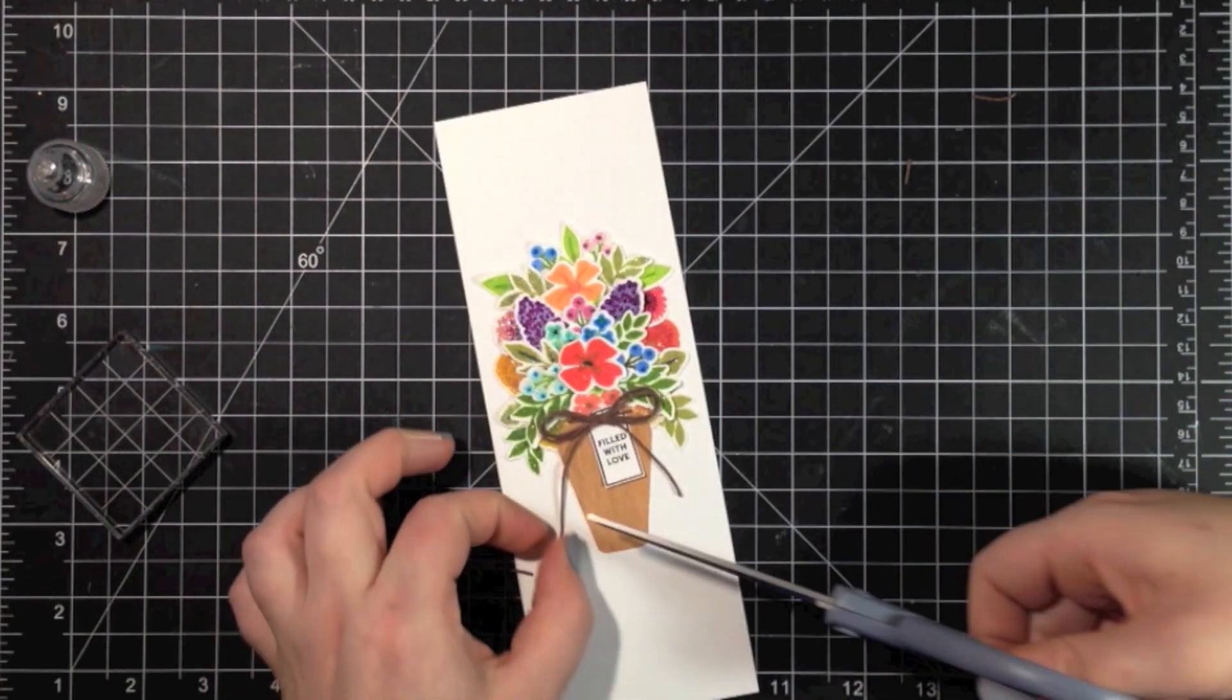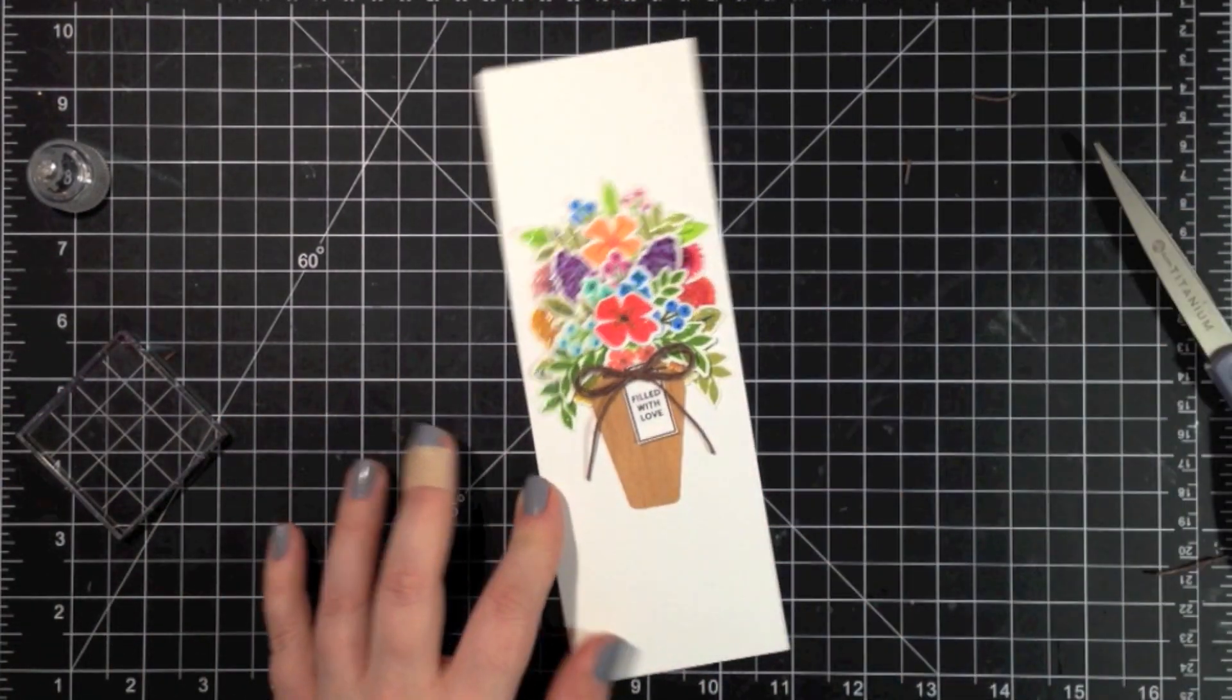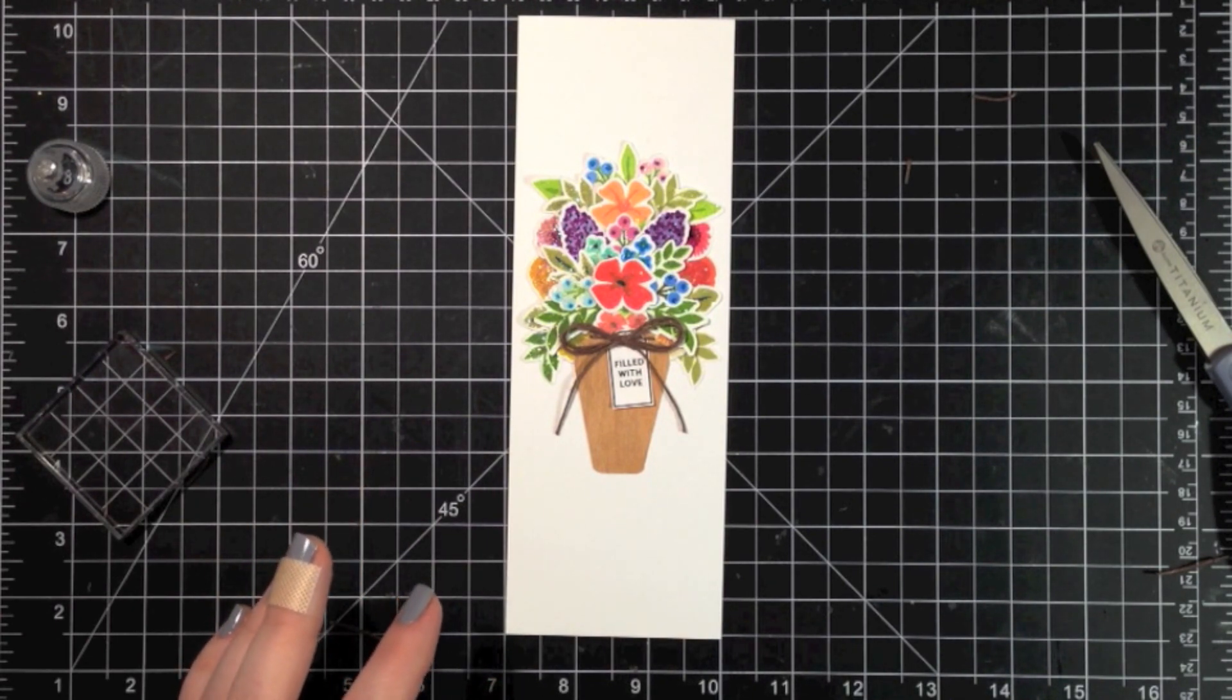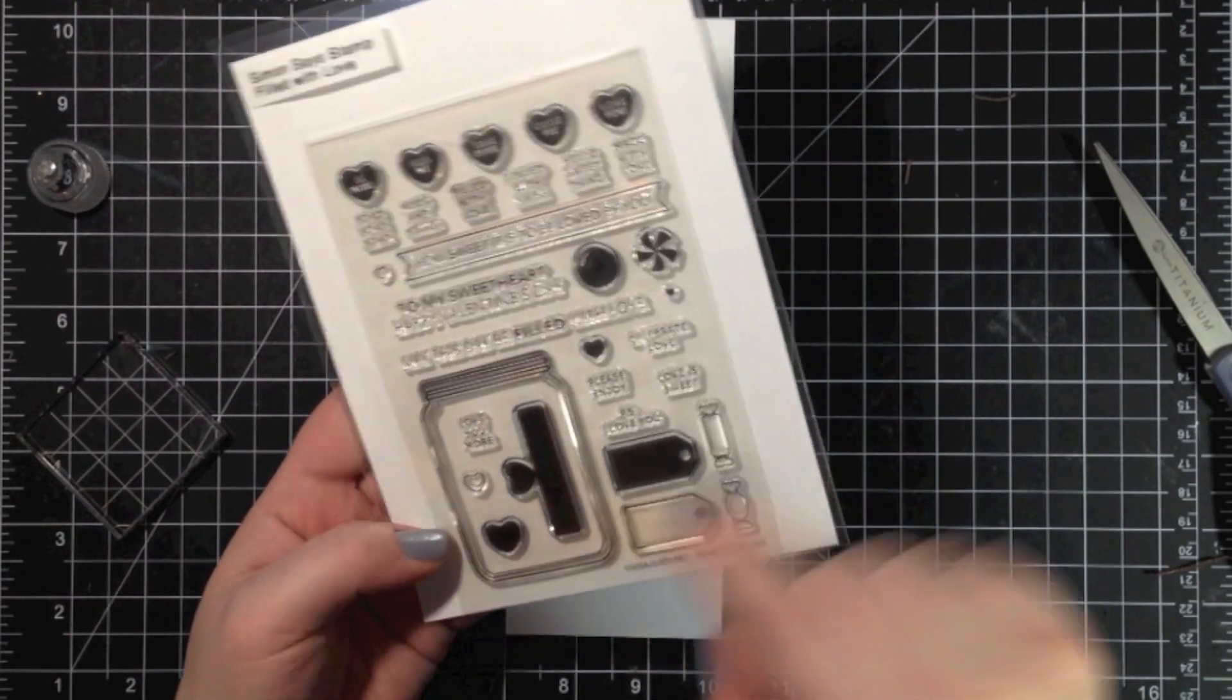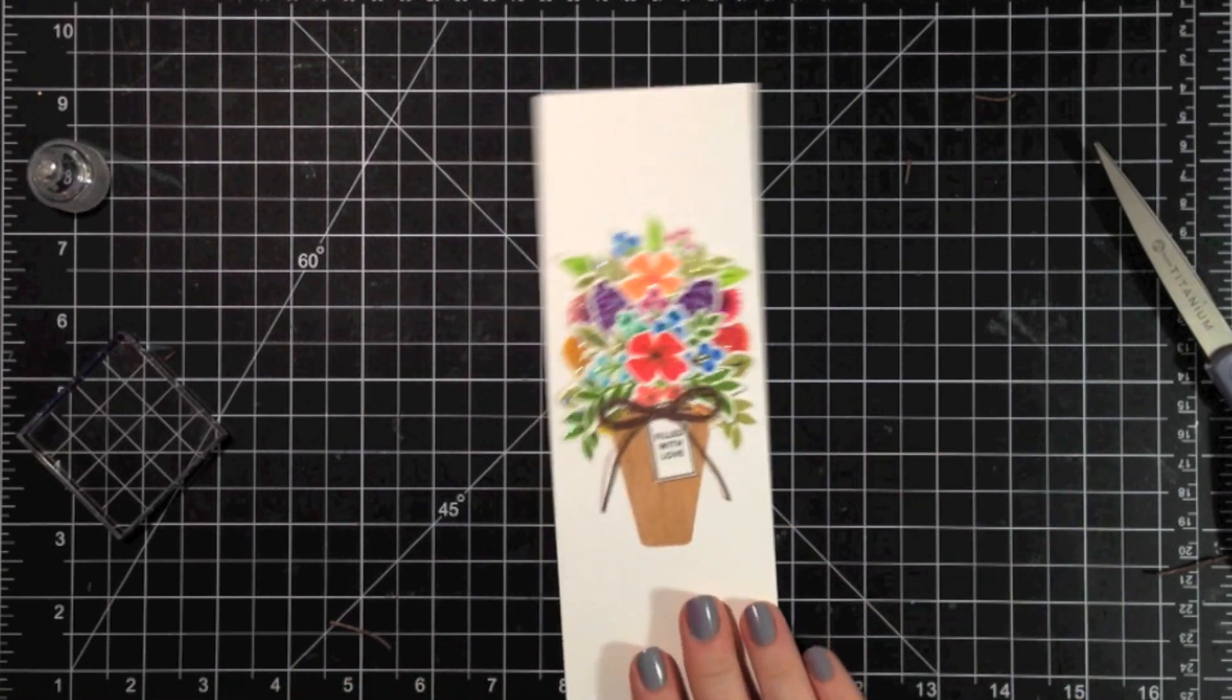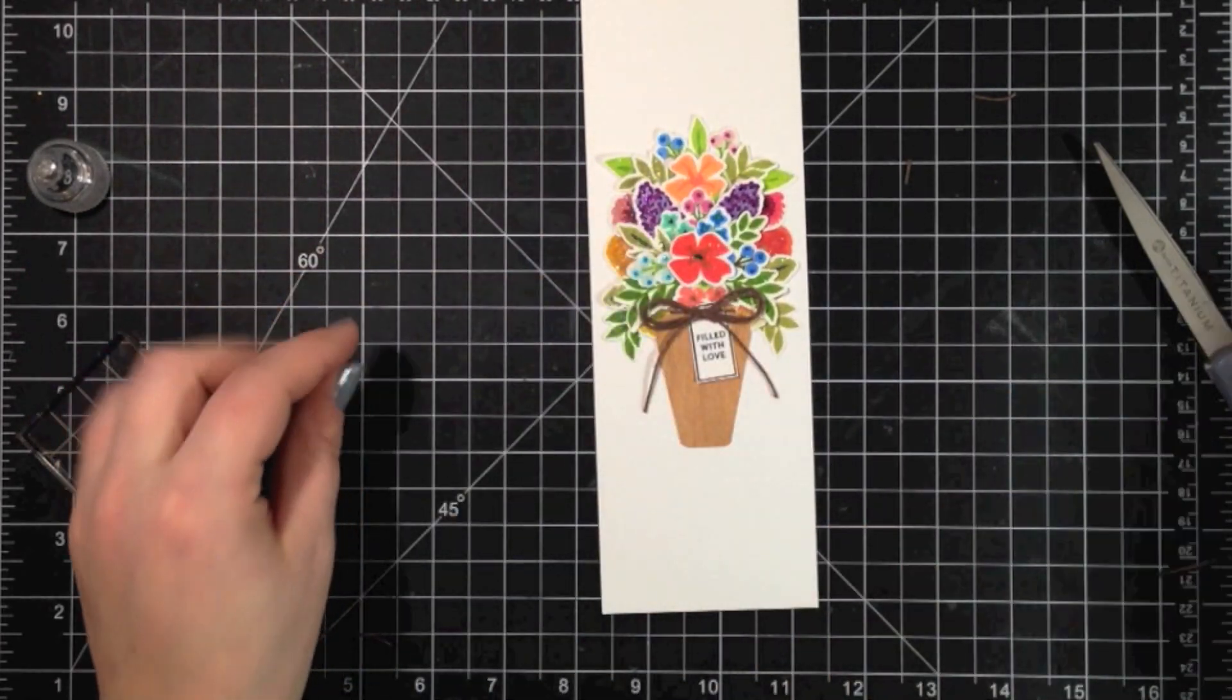So I jumped ahead a little bit here. I didn't realize I didn't have my camera on when I did this part. But I went ahead and used some Hemptique twine and created a bow. I think it's three pieces intertwined to create that bow there. Then I used the Filled with Love stamp set from Simon Says Stamp. It has this really great small tag image with a bunch of different sentiments that fit perfectly in there. I just thought the Filled with Love worked really well for this floral image that I've created.